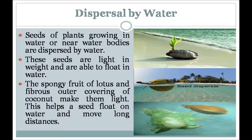Dispersal by water: The seeds and fruits of some plants that grow in water or near water bodies are dispersed by water. These seeds are light in weight and able to float. The coconut has a thick coat of fiber which enables it to float and be carried to far-off places by water. The lotus fruit has a spongy part because of which it can float. This method works for seeds which can float in water.